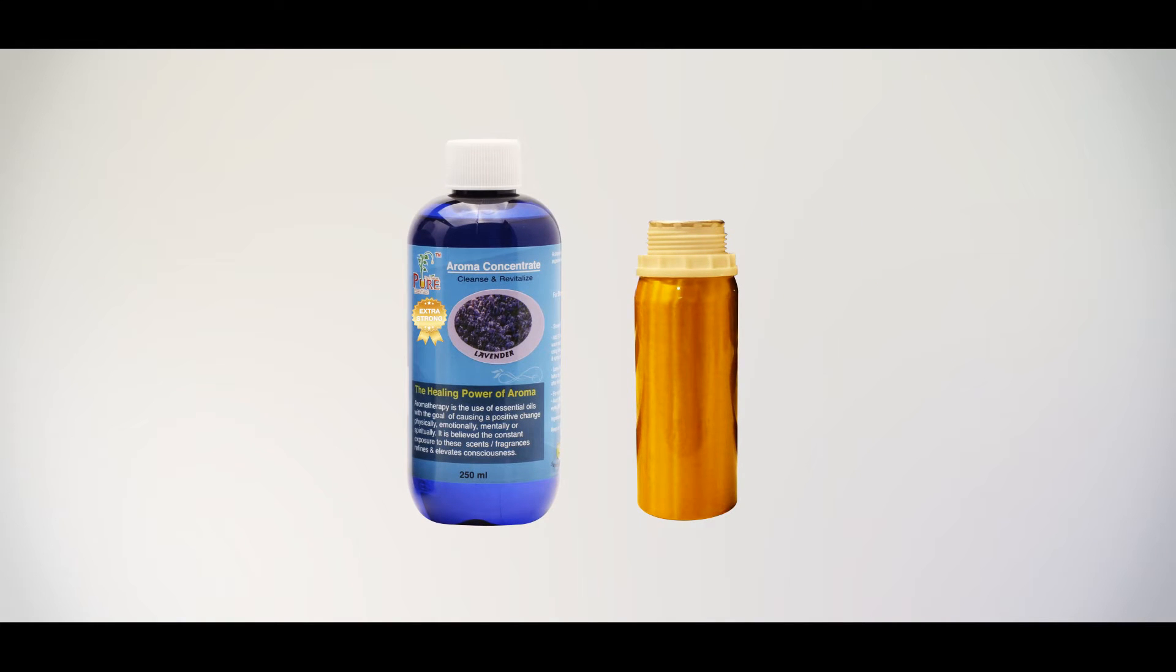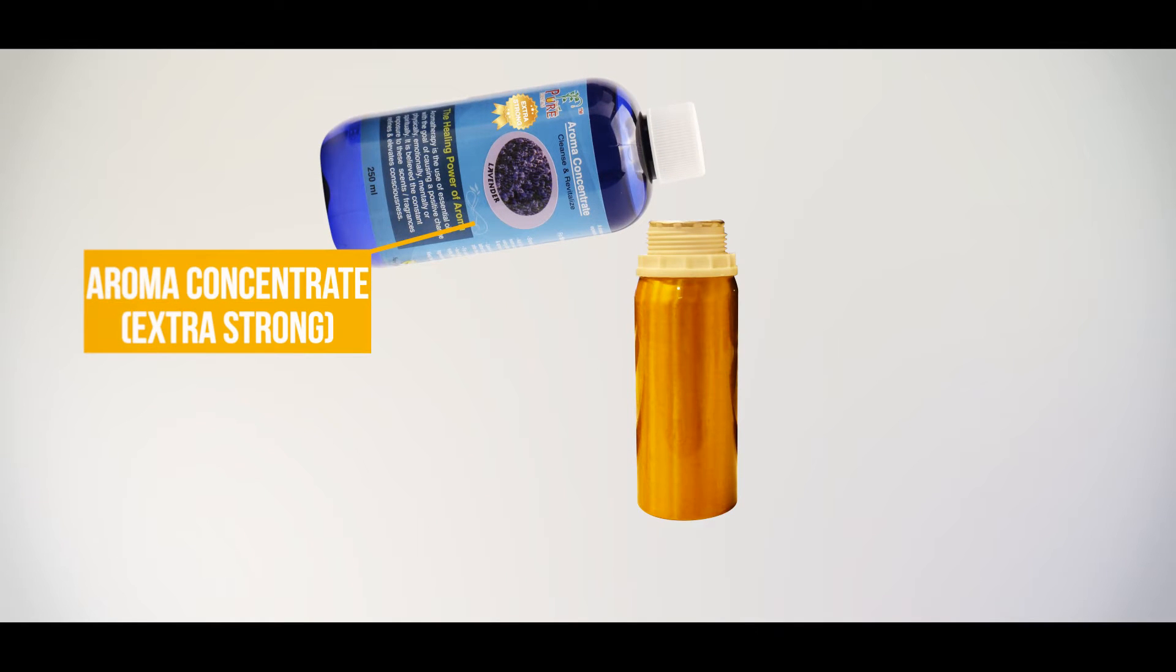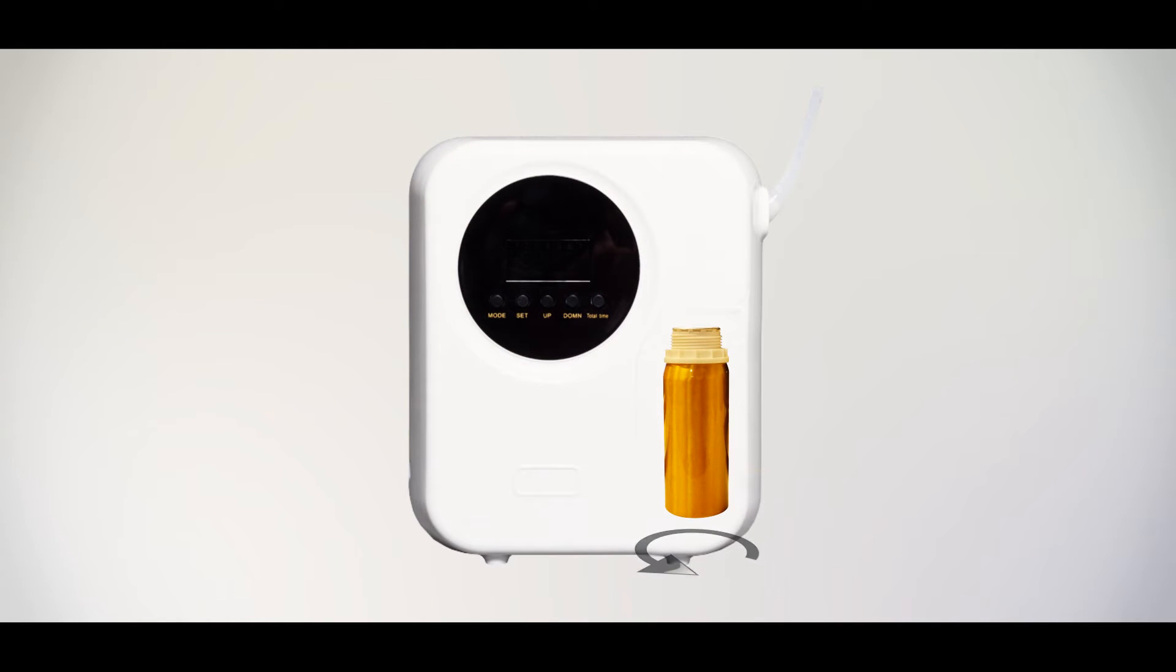Using the Aroma Nebuliser is quite easy. All you need to do is add our Aroma Concentrate Extra Strong to the aluminum bottle and screw it counterclockwise onto the nebuliser.